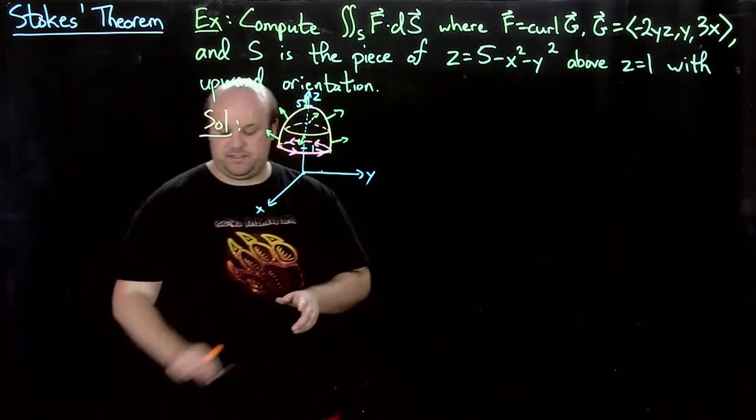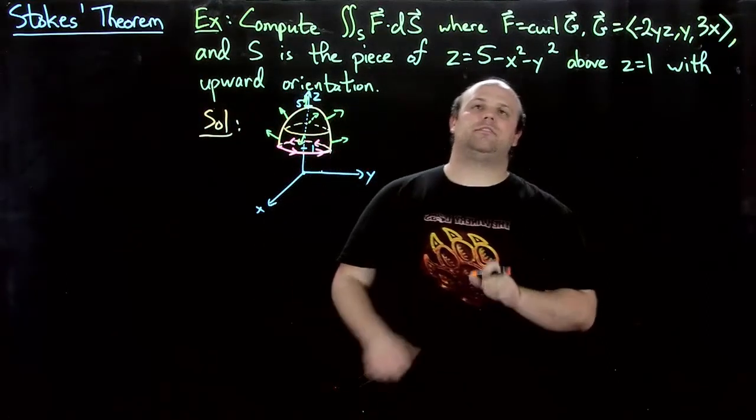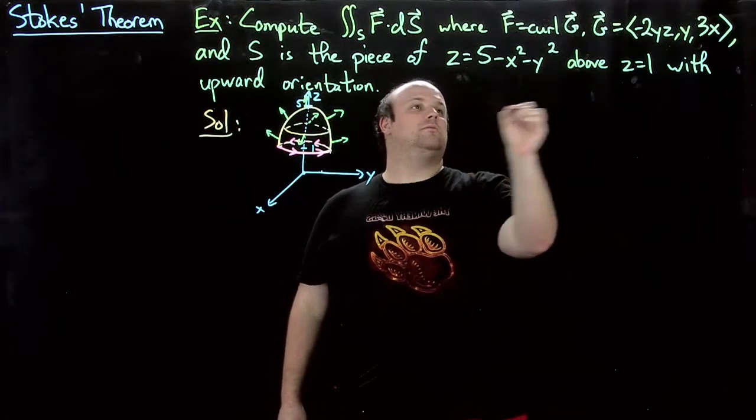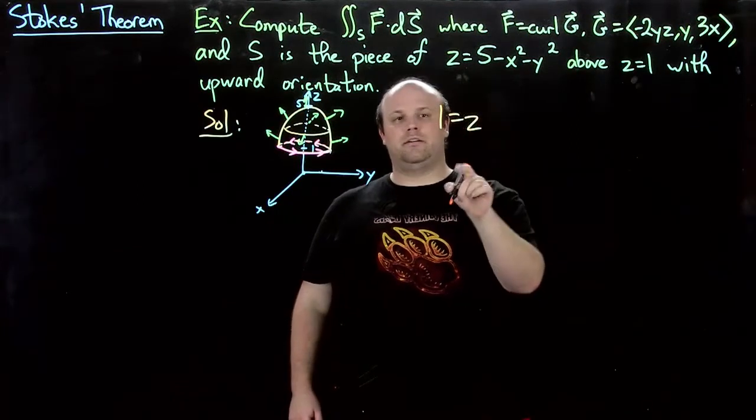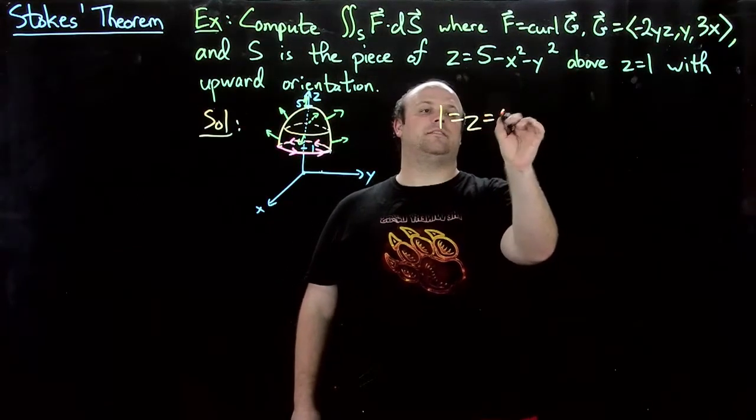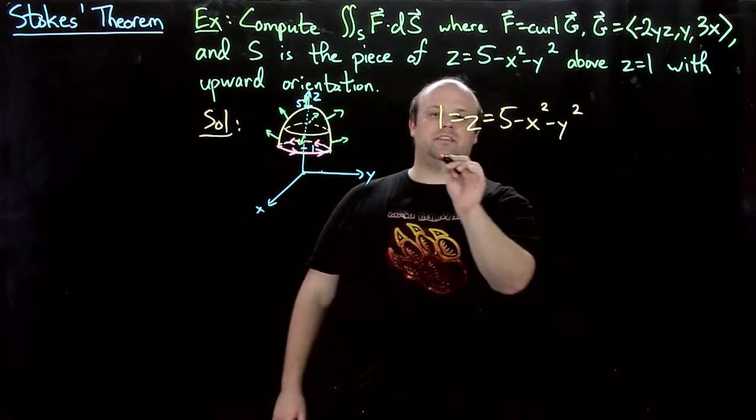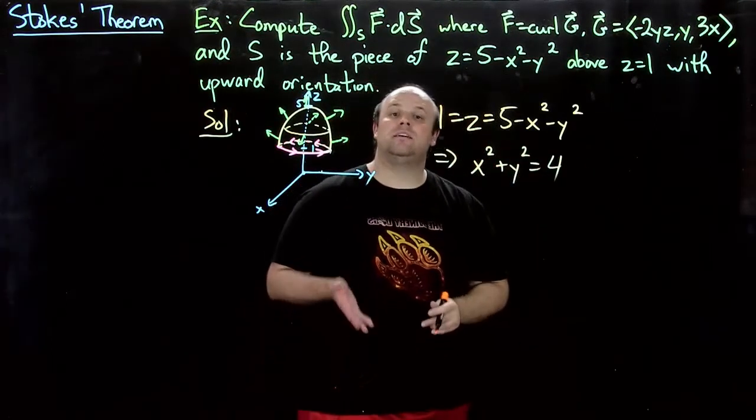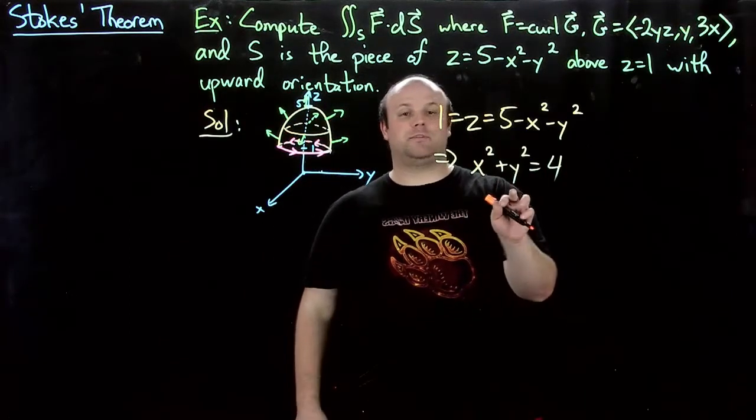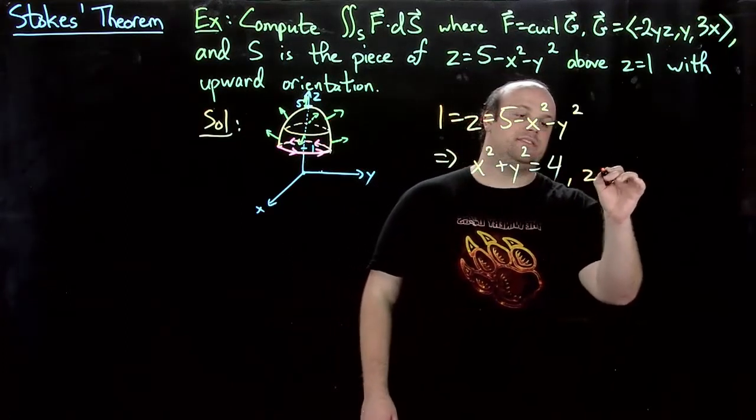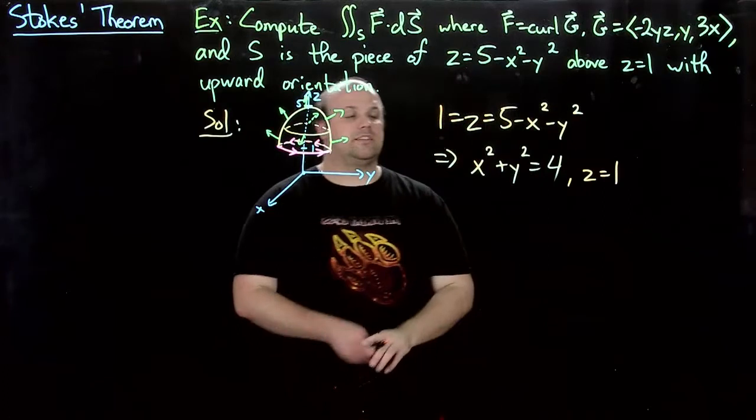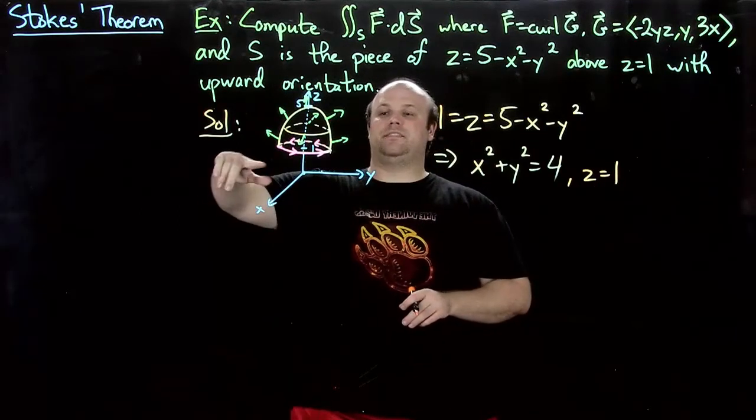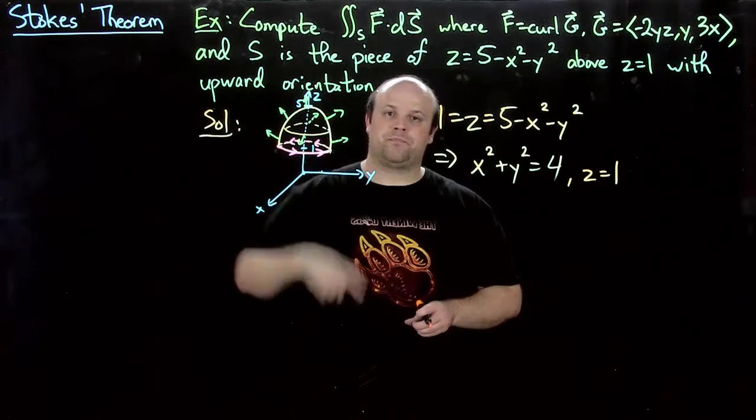So what is the boundary of this surface? Well, the boundary of the surface is given by the intersection of these two. So we know that z is equal to 1, but it's also equal to 5 minus x² minus y². And this tells us that x² + y² = 4. So the boundary is given by the circle x² + y² = 4 together with z equals 1. Because if we don't specify that z equals 1, this gives us a whole cylinder. So if we specify z equals 1, that gives me that circle right there.